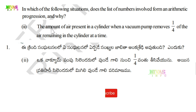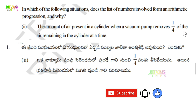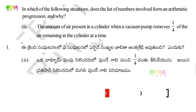Question number 2: The amount of air present in a cylinder when a vacuum pump removes 1/4 of the air remaining in the cylinder at a time. Every time 1/4 is removed. Let's check if this situation forms an arithmetic progression.